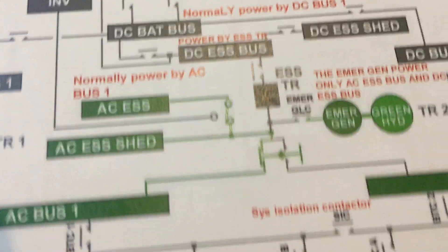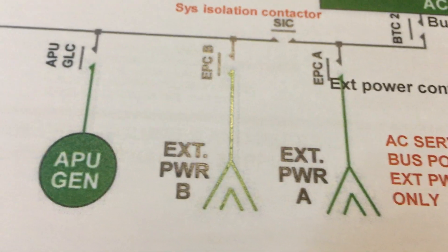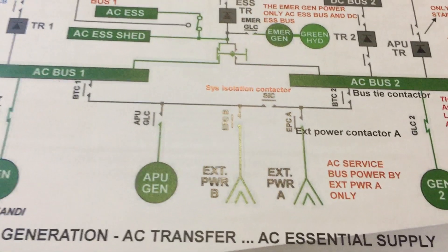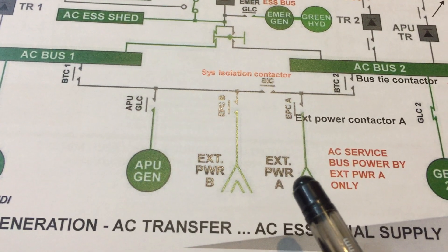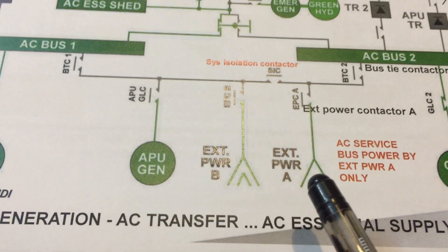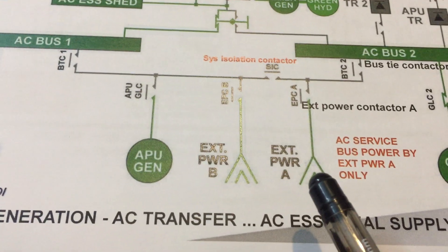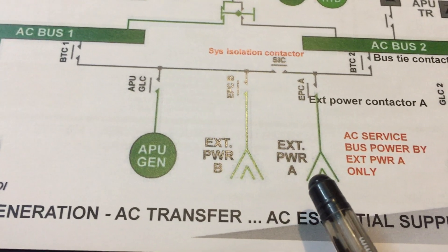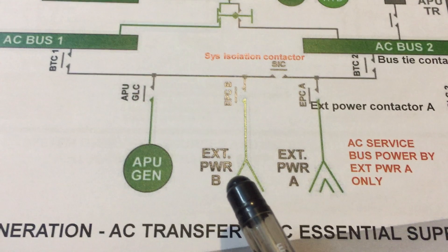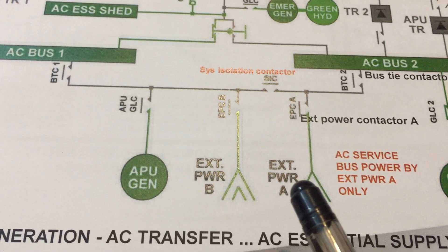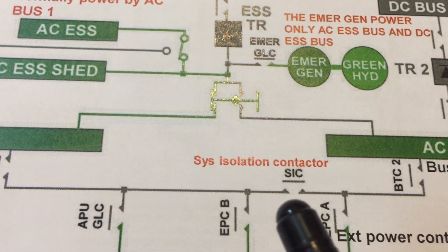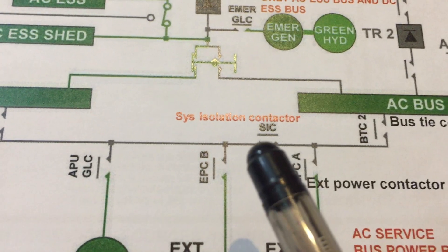The second source is external power — we have external power A and external power B. One electrical power is enough to power the whole aircraft. Usually we connect external power number one to power AC bus number one when the aircraft is on the ground, because only external power A can power the ground service bus — external power B cannot power the ground service bus. There is a contactor called the system isolation contactor.